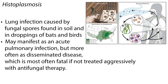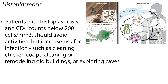Histoplasmosis is a lung infection caused by fungal spores found in soil and in droppings of bats and birds. It may manifest as an acute pulmonary infection, but more often as disseminated disease, which is most often fatal if not treated aggressively with antifungal therapy. Patients with histoplasmosis and CD4 counts below 200 cells per cubic millimeter should avoid activities such as cleaning chicken coops, clearing or remodeling old buildings, or exploring caves.